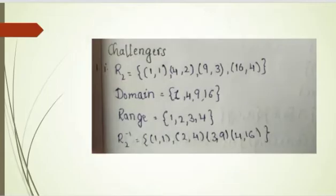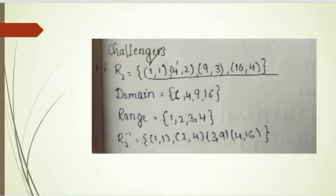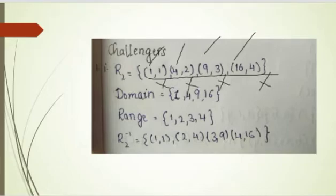So R2 is equal to this given data. The domain: 1, 4, 9, and 16 are the domain elements, and the range elements — whichever I am marking with a cross — are 1, 2, 3, and 4.